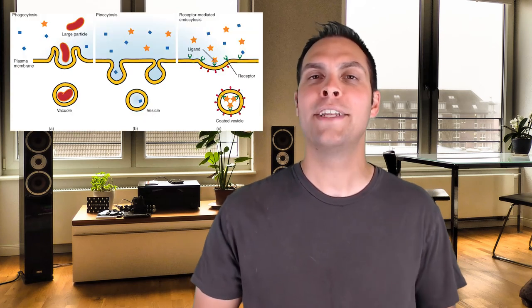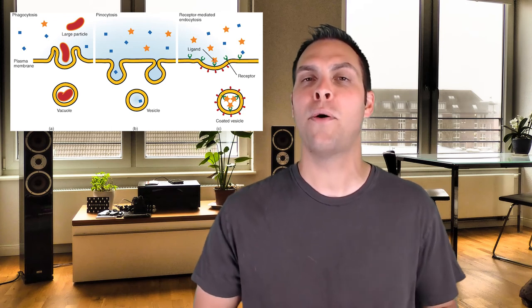The last type of transport to discuss is bulk transport, found only in eukaryotic organisms — particularly animal cells and some protists. Bulk transport is a form of active transport that relies on the bending of the plasma membrane and the creation of vesicles to move objects or solutes across the plasma membrane. It requires energy to move the membrane and form or release vesicles. There are two broad types: endocytosis and exocytosis.